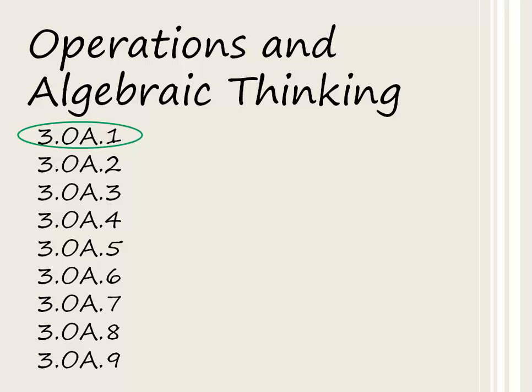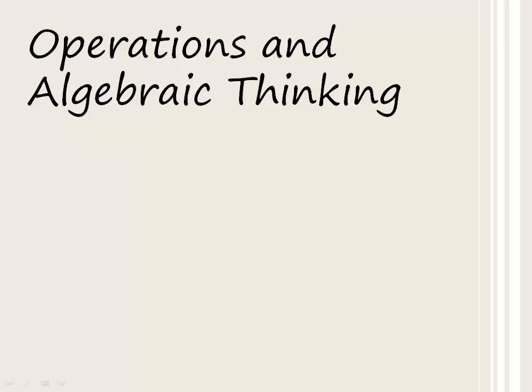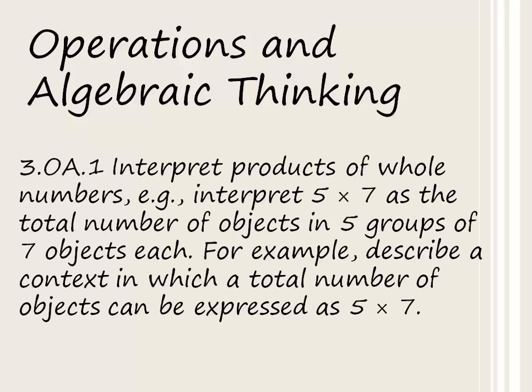This is the first of nine standards under the Operations and Algebraic Thinking category. Standard 3.OA.1 says: interpret products of whole numbers. For example, interpret five times seven as a total number of objects in five groups of seven objects each.